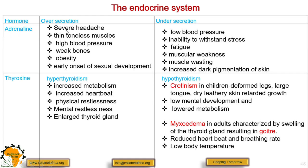Oversecretion of adrenaline causes severe headache, toneless muscles, high blood pressure, weak bones, obesity — that is being overweight — and early onset of sexual development.